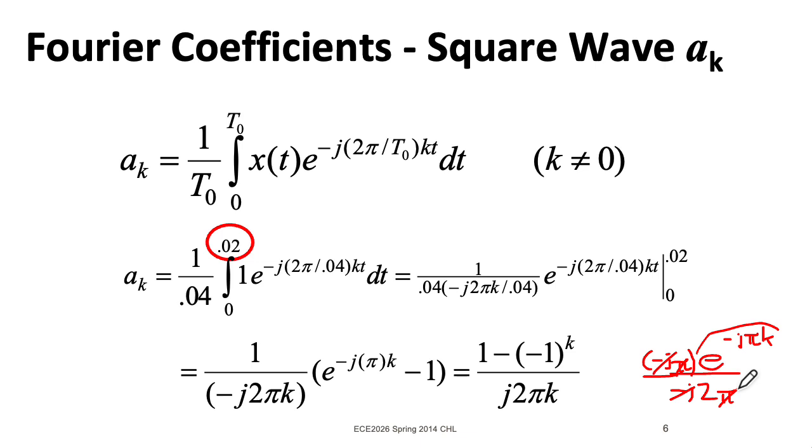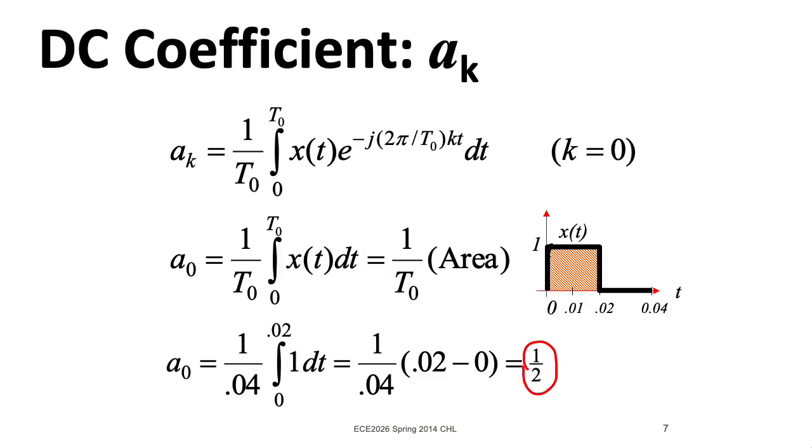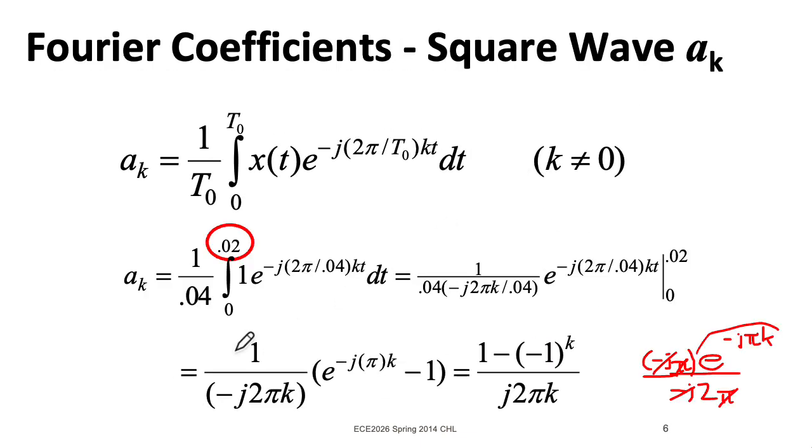Now that does feel a little weird, because I said let k go to 0, treating k as a real number, even though you know k is supposed to be an integer. But don't worry about it, it works out okay. It's fine. Obviously this approach of just computing the area is faster, but it's good to know that this formula is consistent with that result.